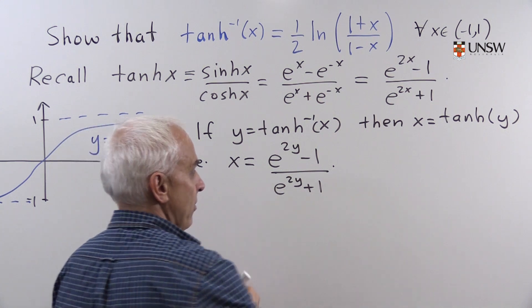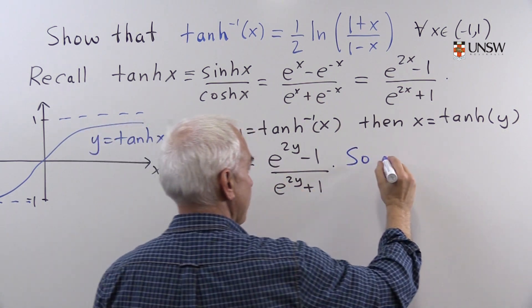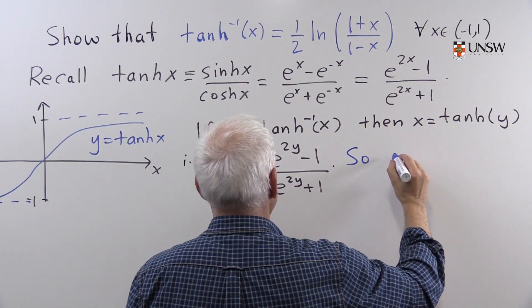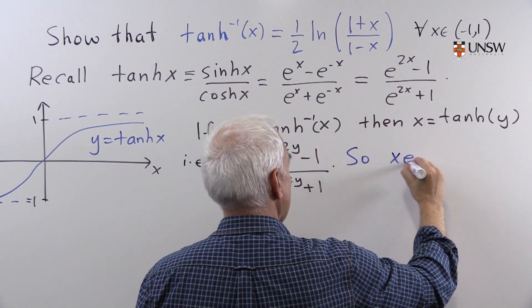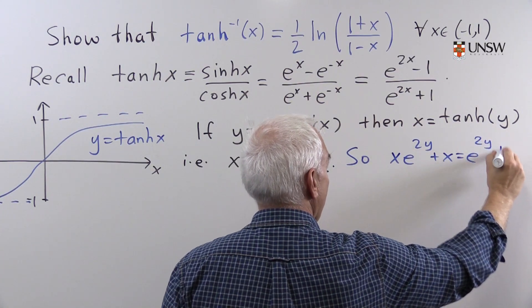So we solve that for y by clearing the denominators. So we'll get x e to the 2y plus x equals e to the 2y minus 1.